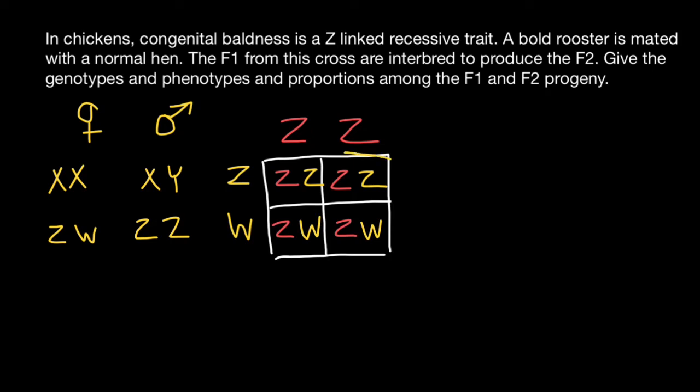As you see, 100% of the roosters would have a normal phenotype because they have a normal Z chromosome with the normal allele, which is dominant. These chromosomes have the recessive allele. As for the hens, 100% of the hens would have this genetic disorder, which is baldness. Let's also add hens here and roosters here. This is what we are going to see in the F1 generation.